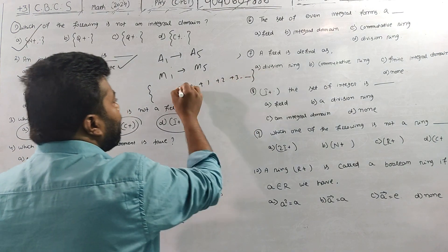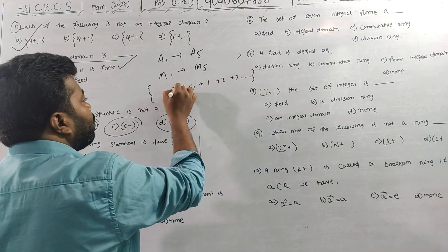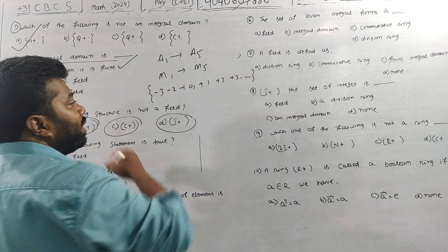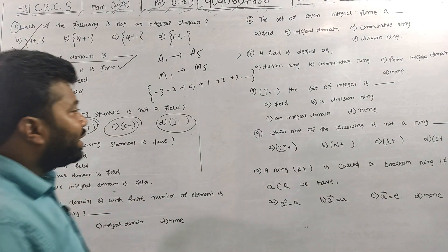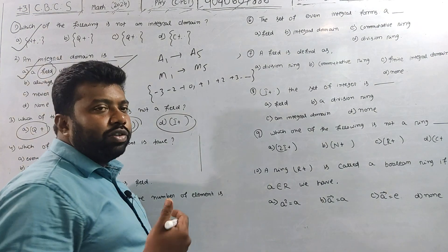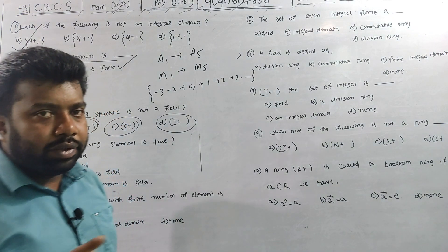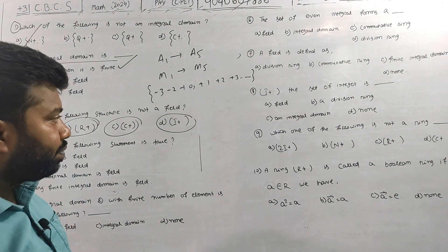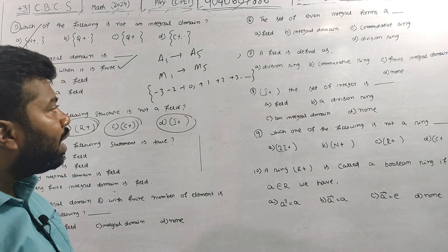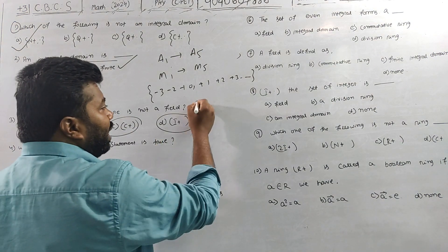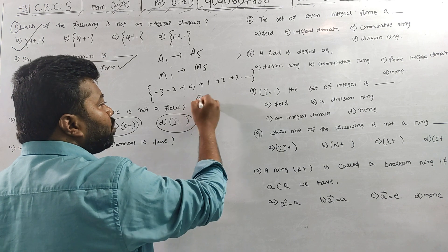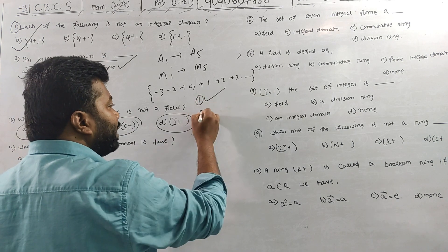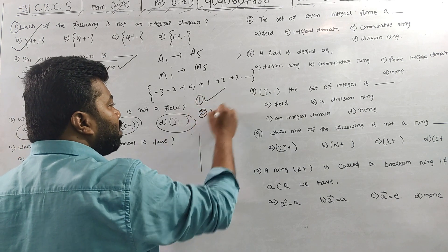The set of integers is denoted by I (or Z), which includes {..., -3, -2, -1, 0, 1, 2, 3, ...}. This is your set of integers. Let us check the first property.